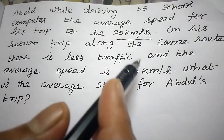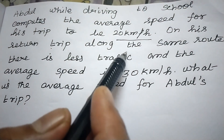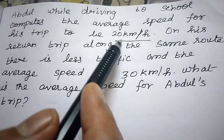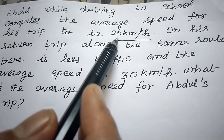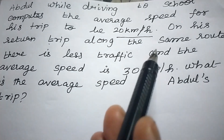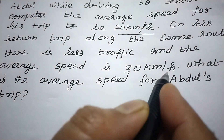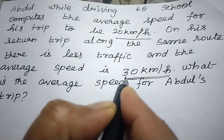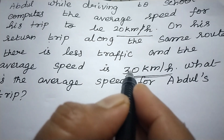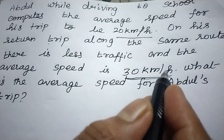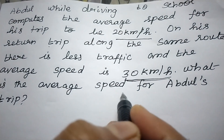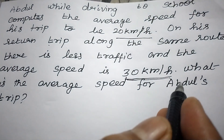Here it is given that while going to school his speed is 20 km per hour. Then while returning home his speed is 30 km per hour. So we have to find the average speed.